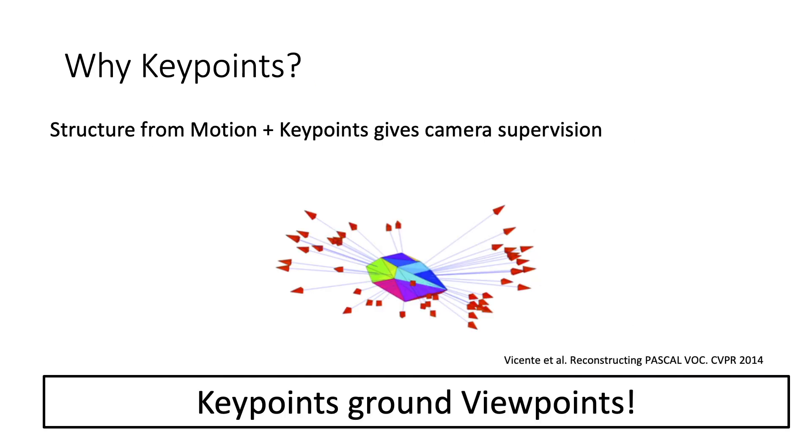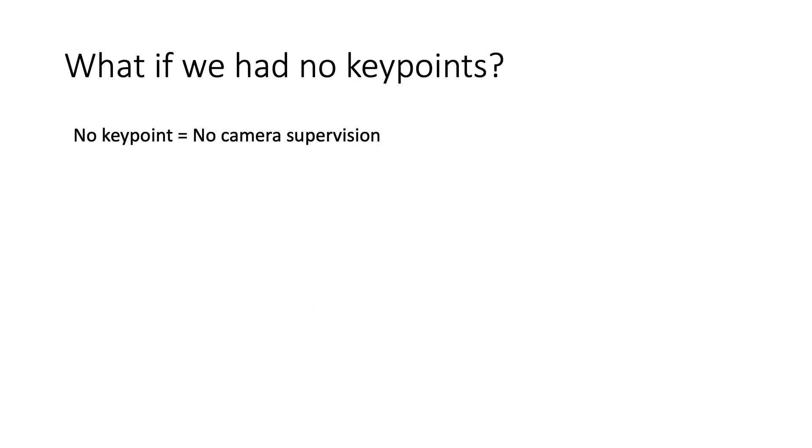Key points are useful because they ground viewpoints. Structure from motion techniques, run over key points on the entire dataset, give cameras that have been used as supervision by previous works. Without key points, we don't have cameras for the supervision that previous works relied on.